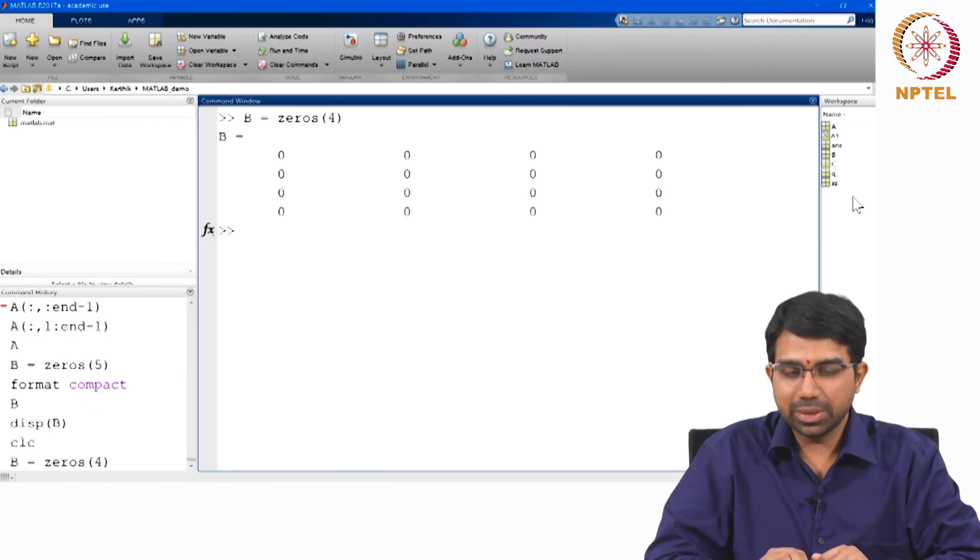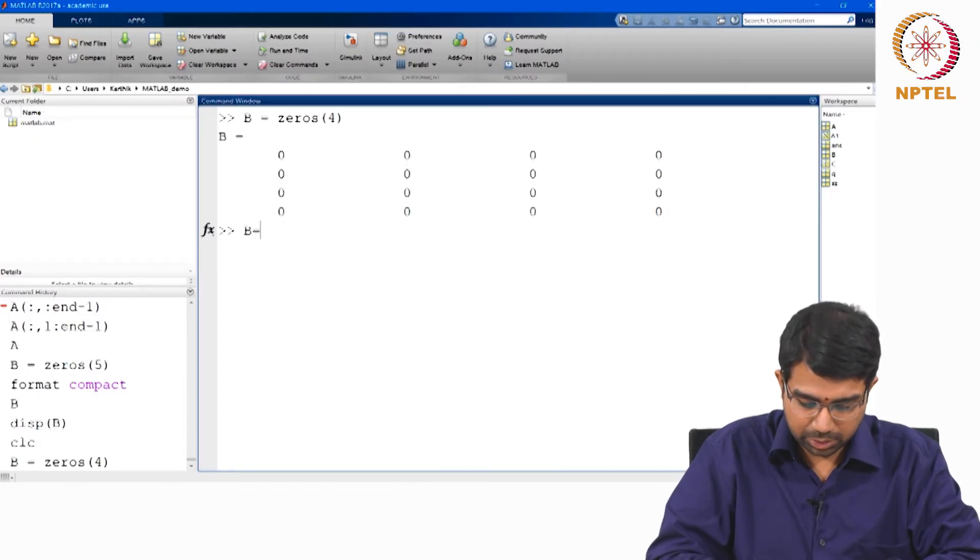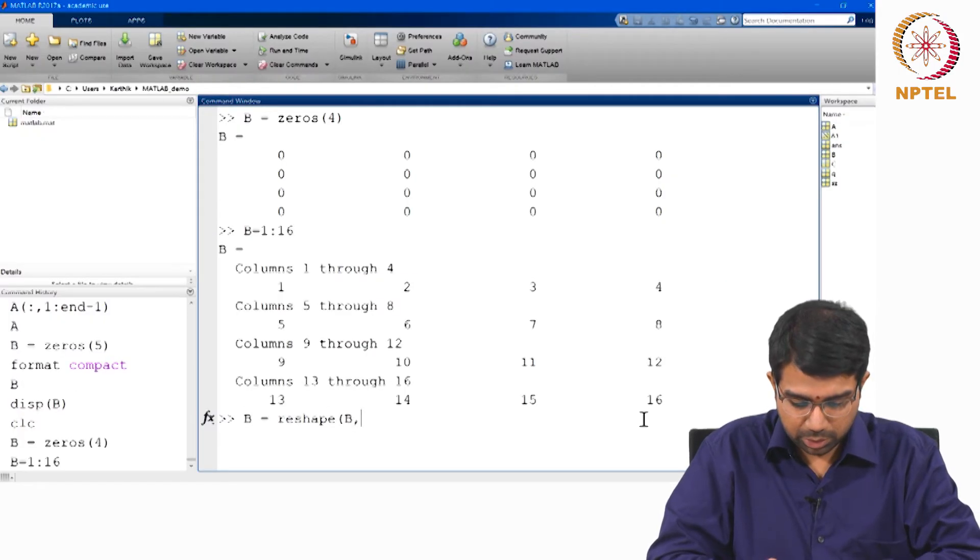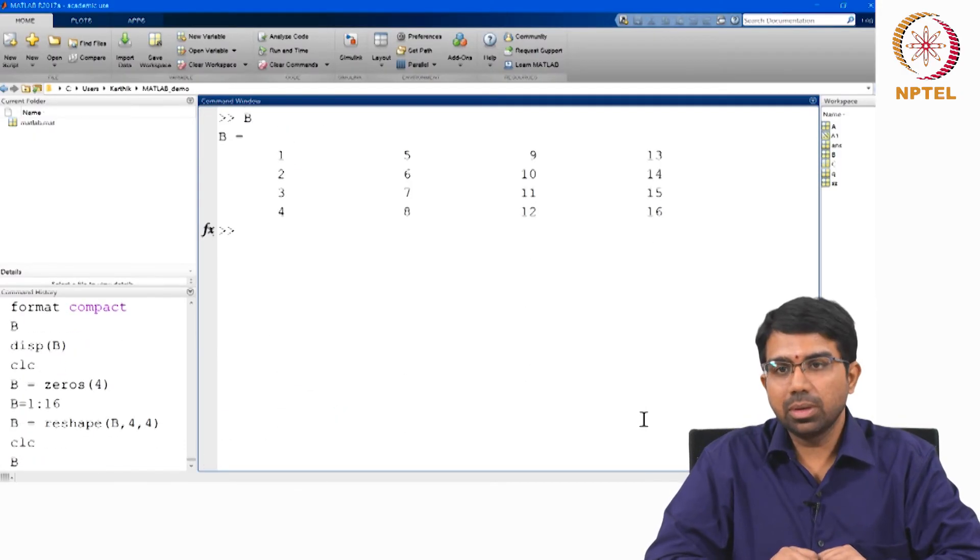So now we have B. So I can also say let us just say B equals 1 colon 16. And B equals reshape B, 4, 4, so this is now B.